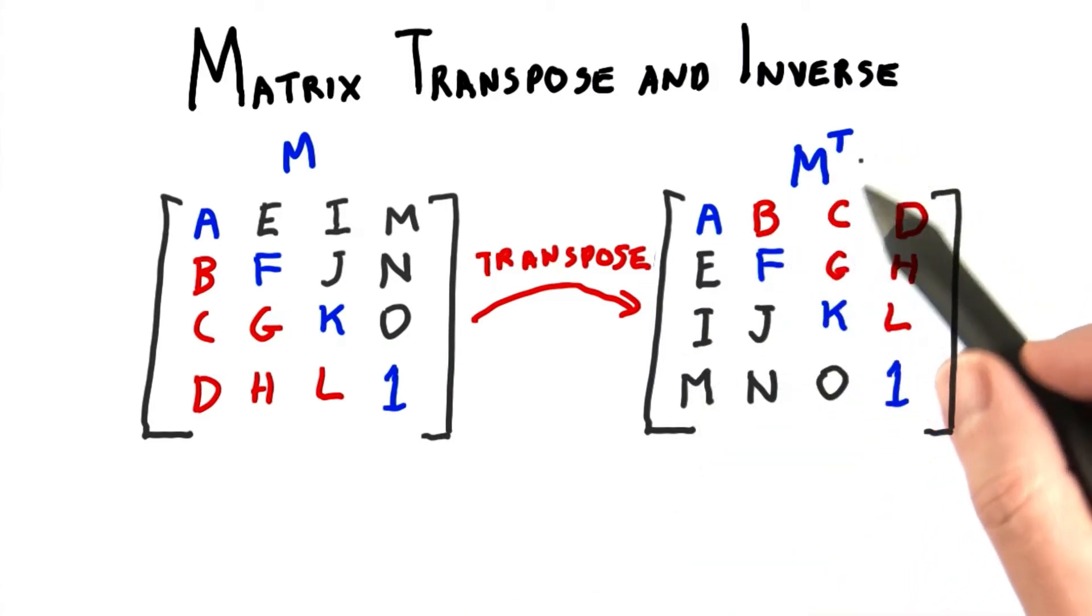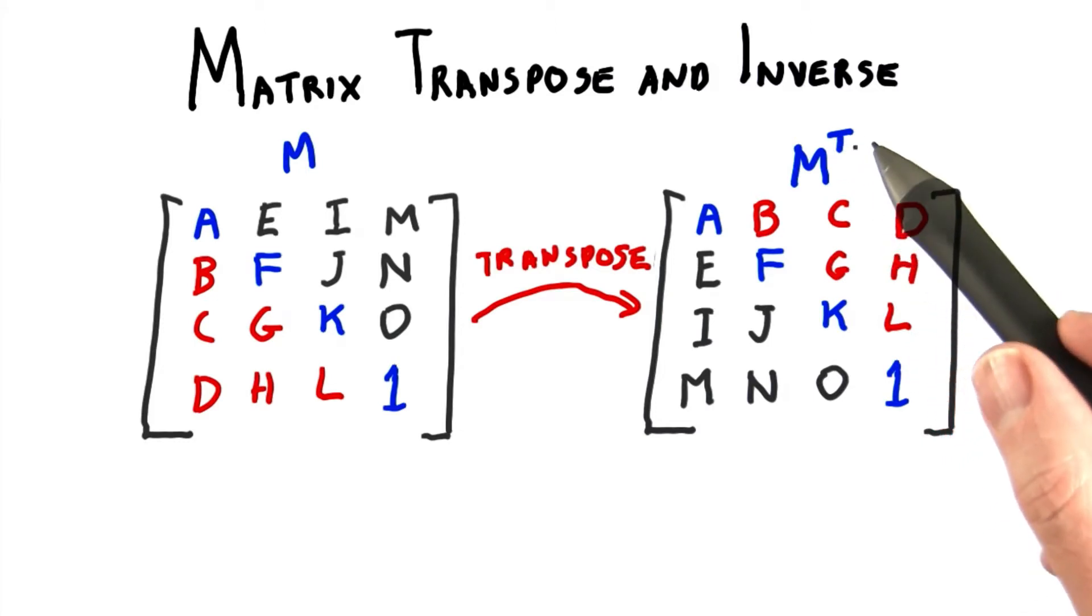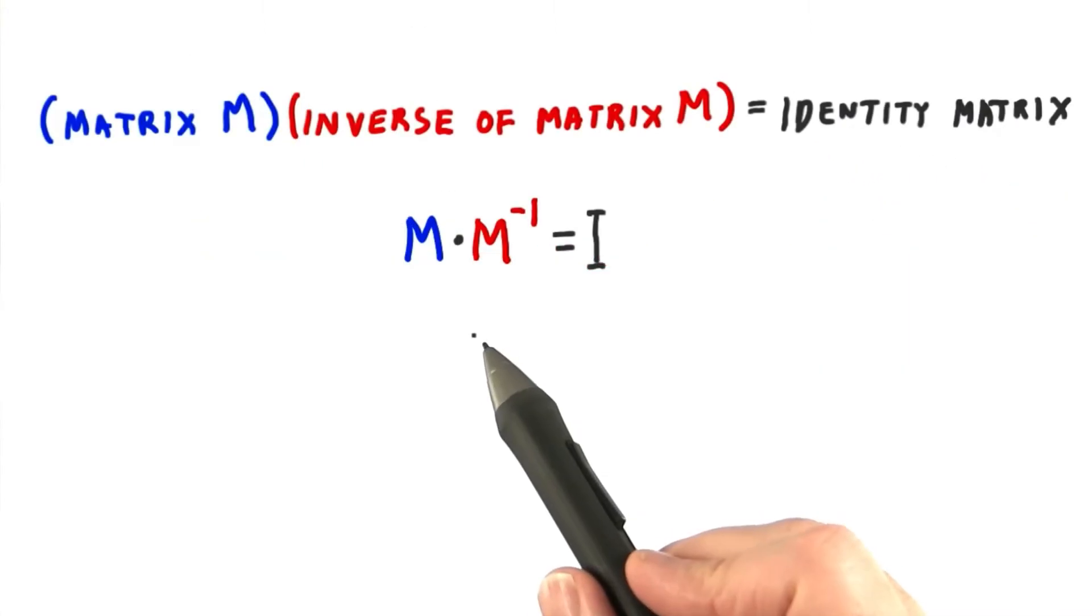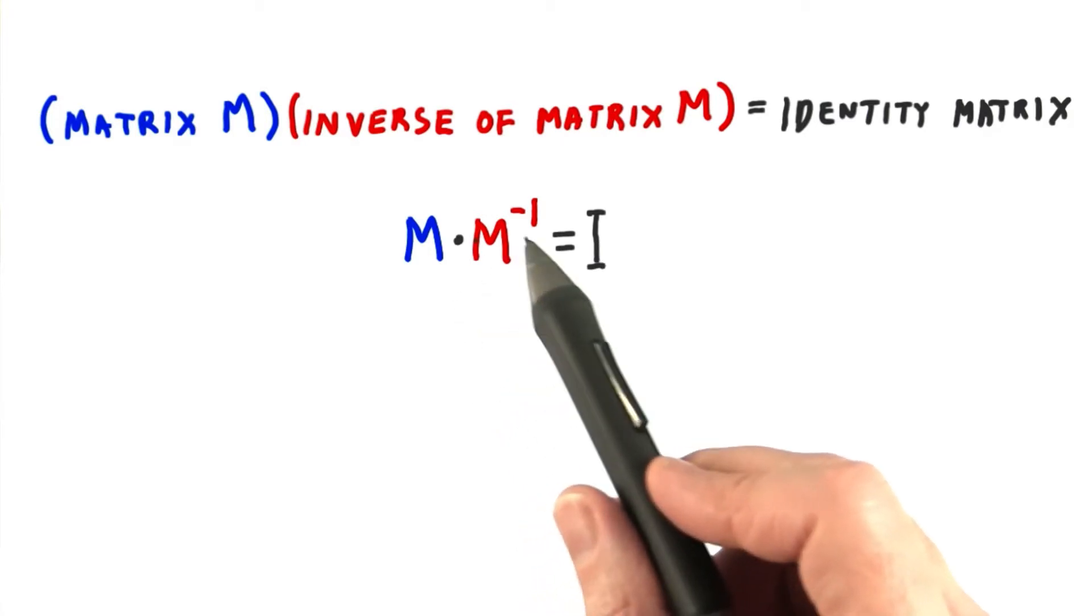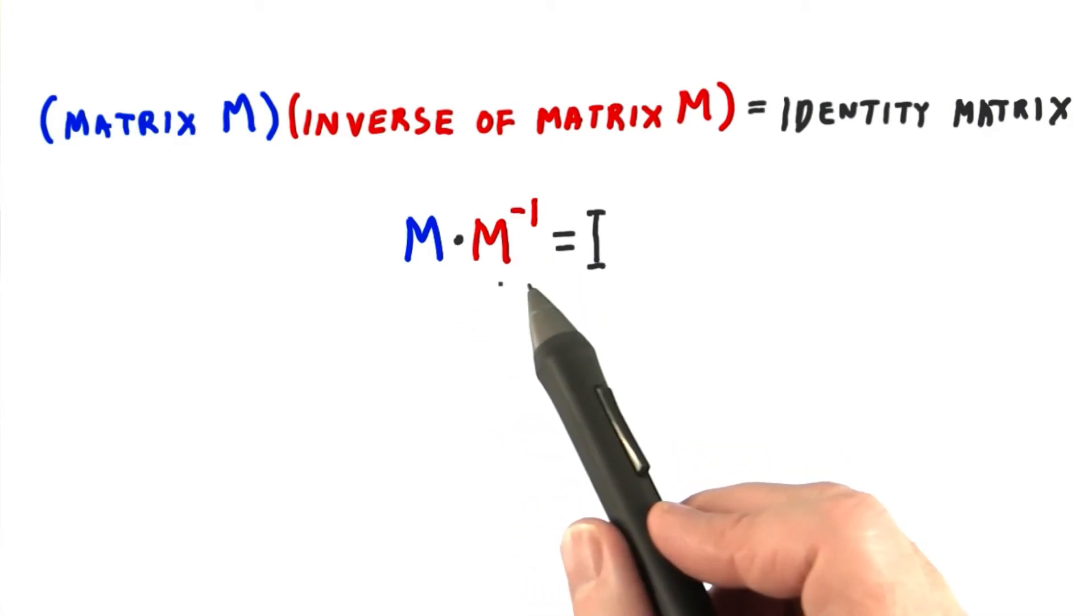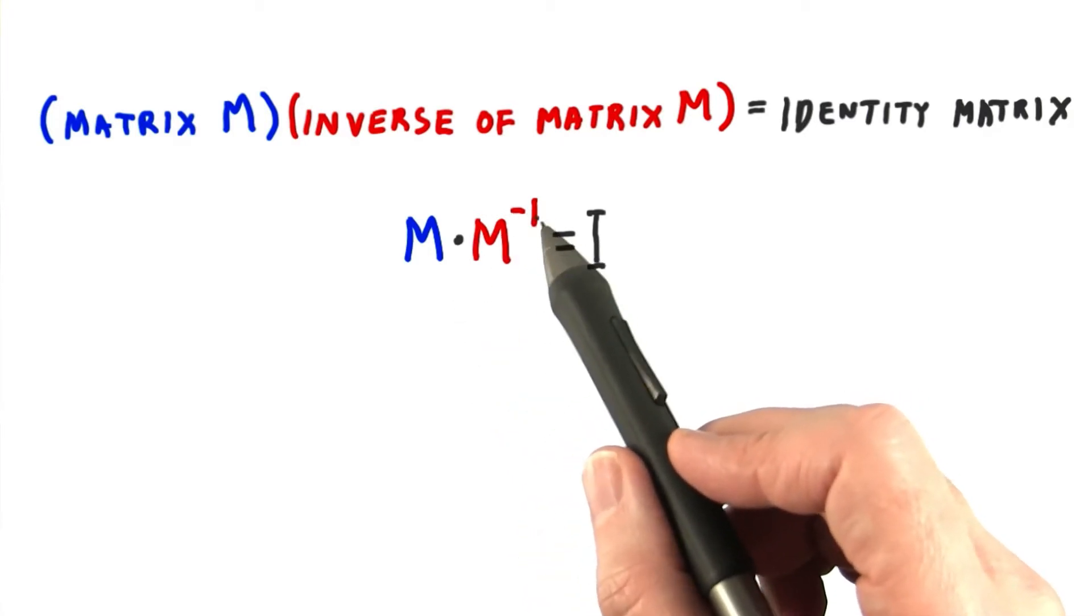The mathematical notation for this is M superscript T, where T means transpose. The other operation that is commonly done to a matrix is computing its inverse. The inverse is shown like this, a negative 1 in the superscript.